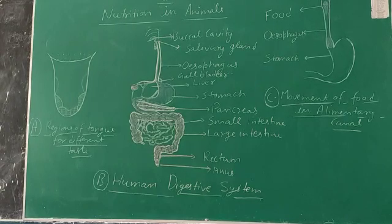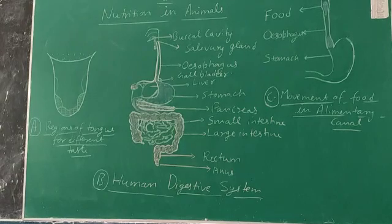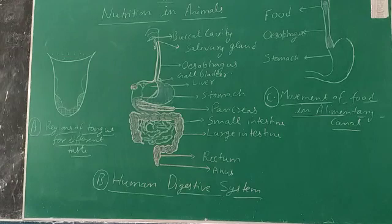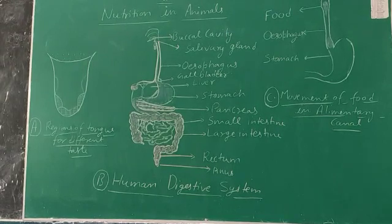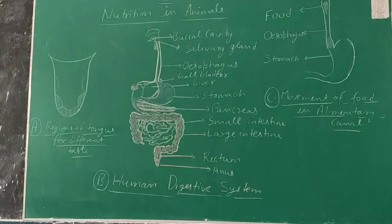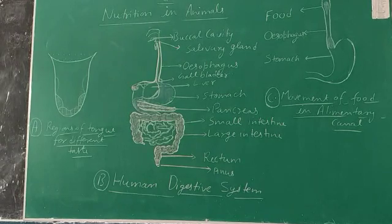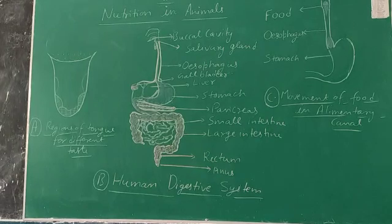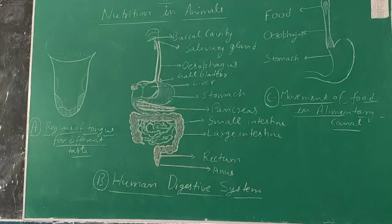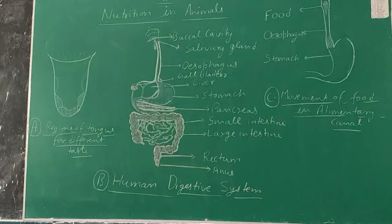The buccal cavity contains salivary glands, tongue, and teeth. Then we move on to the oesophagus, which is a tube-like structure, then to the stomach, which is a J-shaped organ. From there, food moves to the small intestine and then to the large intestine. Different digestive enzymes are secreted in the buccal cavity, some in the stomach, some by the pancreas, and some by the liver. The liver is the largest digestive gland of the body.